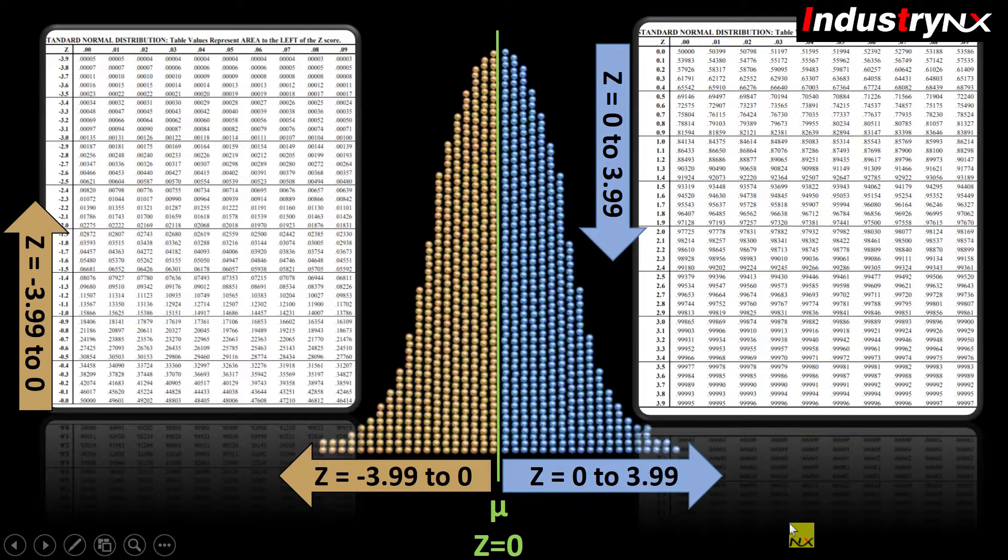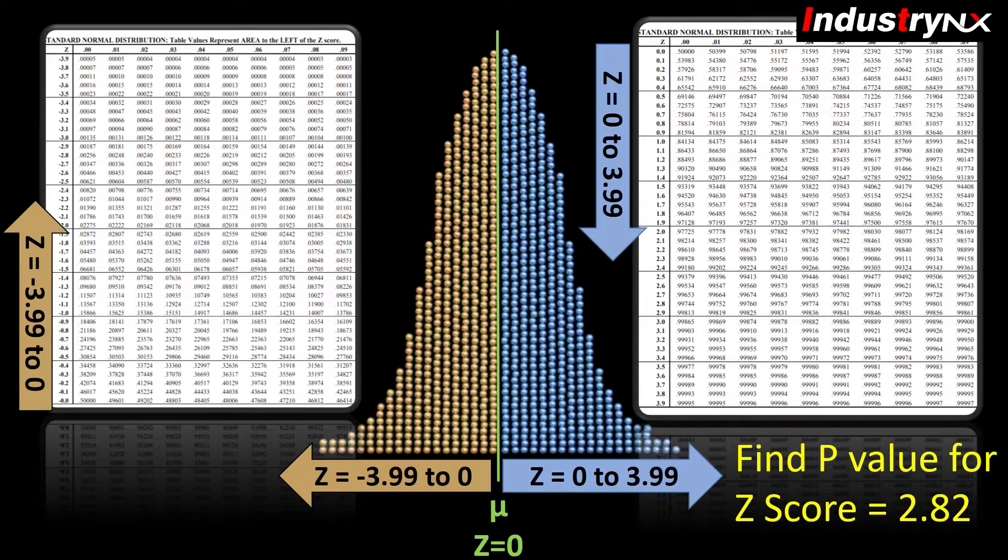Let me explain how to read z-score table to find p-value. Assume we want to find p-value for z-score of 2.82. Since z-score is positive, we need to refer positive value table.